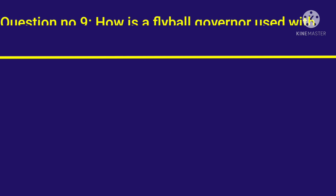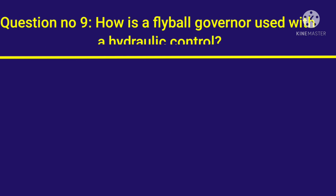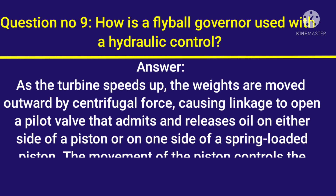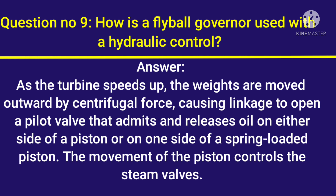Question number 9: How is a flyball governor used with a hydraulic control? Answer: As the turbine speeds up, the weights are moved outward by centrifugal force, causing linkage to open a pilot valve that admits and releases oil on either side of a piston, or on one side of a spring-loaded piston. The movement of the piston controls the steam valves.